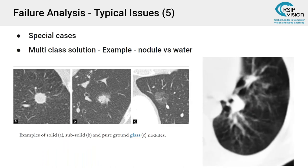Another issue is when the network gets confused by data that looks similar to what you're looking for. For example, in lung nodule segmentation, the network might confuse actual nodules with water in an image. One way to address this is to annotate those confusing images as another class — so instead of just 'nodule' or 'no nodule,' you add a 'water' class, and the network will start to identify water as well as the nodule classes.